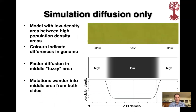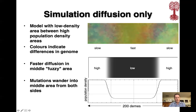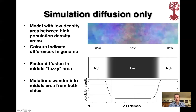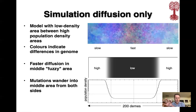Here I show a simulation — a map view evolving over time — where we have a low density area (the dark area in the map) between two densely populated areas, as you can also see in the graph below. The colors indicate differences between genomes of individual DEAMs. You see a very fuzzy area in the middle where things change rapidly. There we have fast diffusion, while on the sides things happen more slowly, though we get the same number of new genes and mutations — and mutations wander into the middle area from both sides.